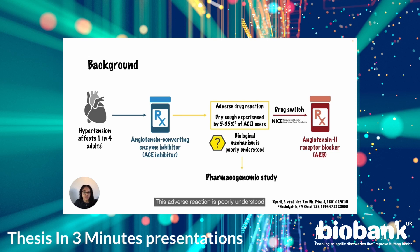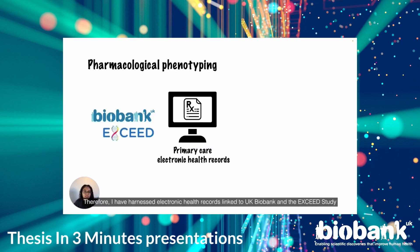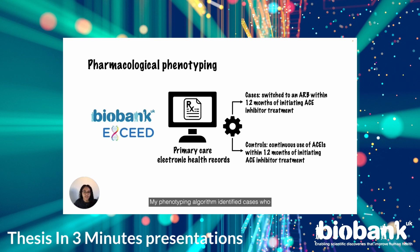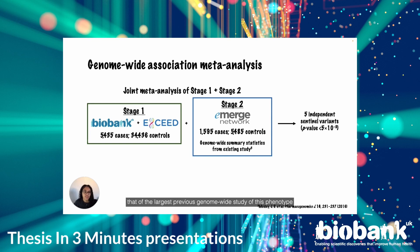This adverse reaction is poorly understood and pharmacogenomics studies can provide insight into involved mechanisms and pathways. However, these studies are limited by small sample sizes, as data on drug response and adverse drug reaction phenotypes are not widely collected at baseline. Therefore, I have harnessed electronic health records linked to UK Biobank and the EXCEED study to define a phenotype for ACE inhibitor-induced cough. My phenotyping algorithm identified cases who switched from ACE inhibitors to ARBs, and controls who were continuous users of ACE inhibitors. Combined with imputed genomic data, I performed a Stage 1 meta-analysis which, thanks to UK Biobank, had a sample size approximately seven times that of the largest previous genome-wide study of this phenotype.